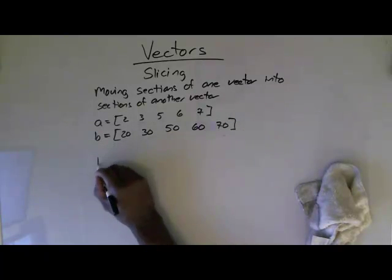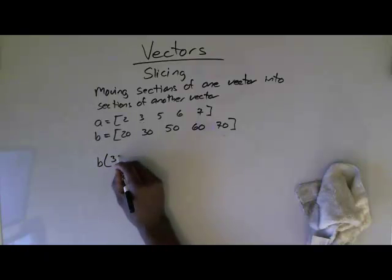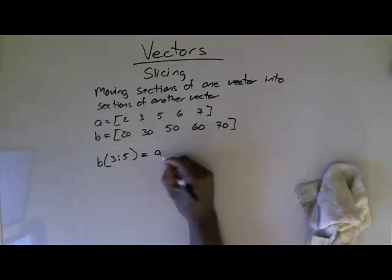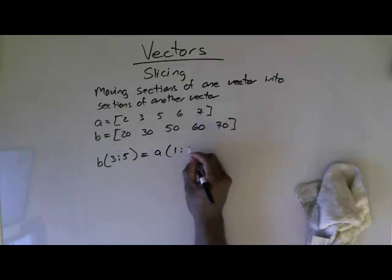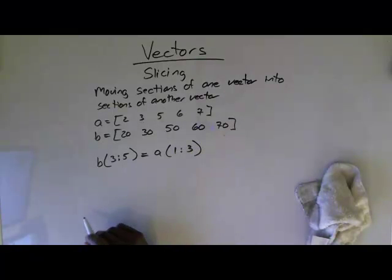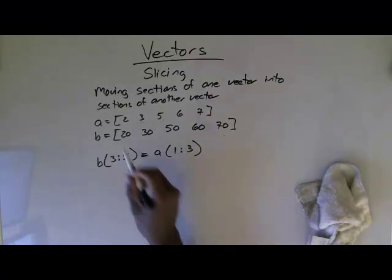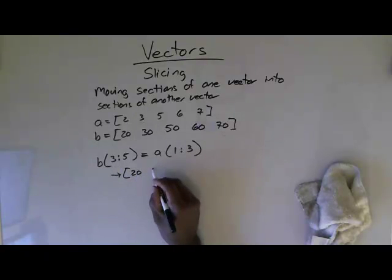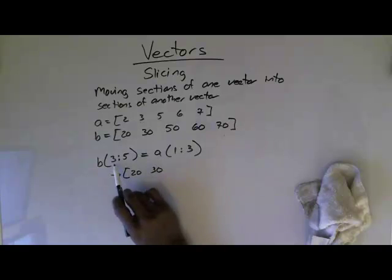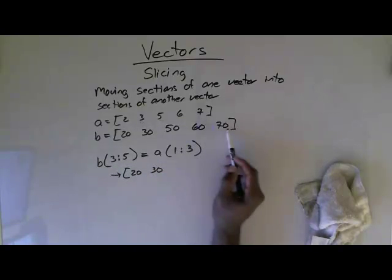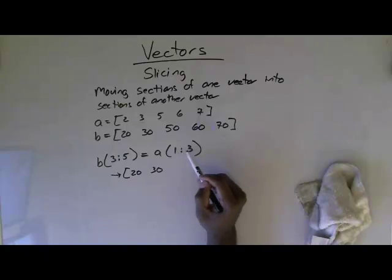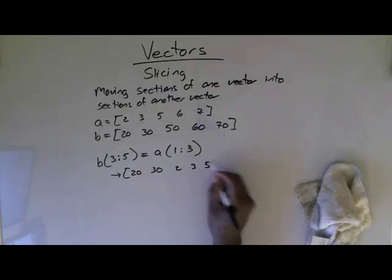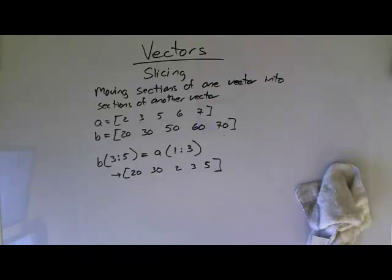Let's do another one. I can do B at 3 colon 5 equals A at 1 colon 3. So that means B at locations 1 and 2 will remain the same, and then 3 through 5 get the values of A 1 through 3. So that's 2, 3, and 5.